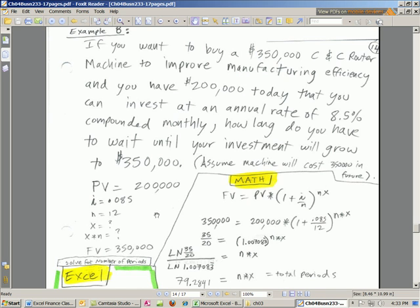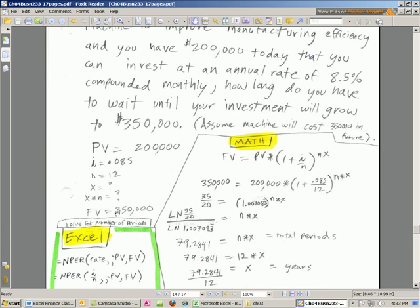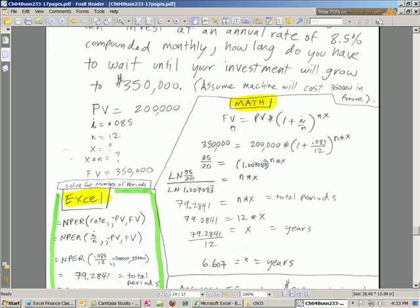The only difference between this problem and earlier problems is we're given the present value and the future value, and we're trying to solve for years. So we plug everything in. If we use our same formula and plug in all the numbers, we get $350,000 for future value, present value, annual rate, number of compounding periods. But it's an exponent we're trying to solve for.